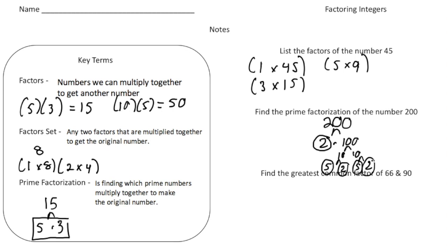Here's the key part: if I multiply every circled number — 2 times 5 times 2 times 5 times 2 — we get 200. So 2 times 5 is 10, times 2 is 20, times 5 is 100, times 2 is 200. I like to rewrite this using exponents: instead of saying 2 times 2 times 2, write 2 to the third power, and instead of saying 5 times 5, write 5 squared. So the prime factorization is 2³ times 5².